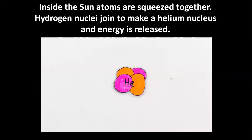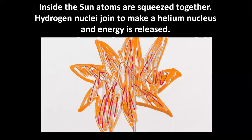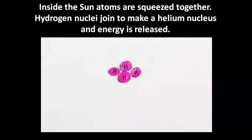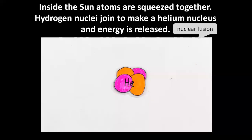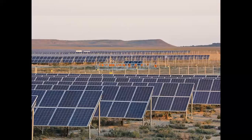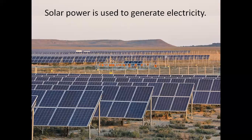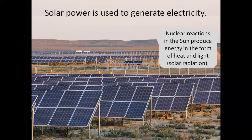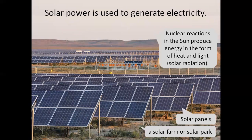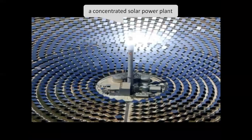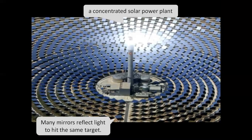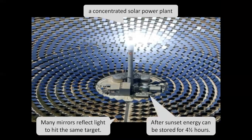Inside the sun, atoms are squeezed together. Hydrogen nuclei join to make a helium nucleus and energy is released. This reaction is called nuclear fusion. Solar power is used to generate electricity. Nuclear reactions in the sun produce energy in the form of heat and light — solar radiation. Solar panels and solar farms harness this energy. A concentrated solar power plant uses many mirrors to reflect light to hit the same target. After sunset, energy can be stored for four and a half hours.